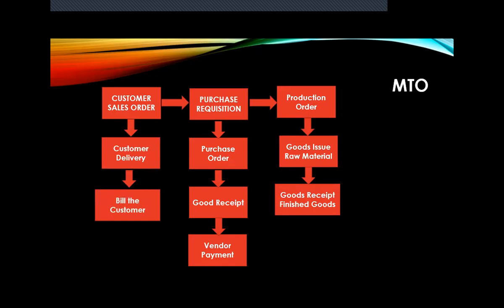So this is Make-to-Order: the customer gives the order confirmation, based on which raw material is purchased, sent to the production line, finished goods are produced, delivered to the customer, and the customer is billed. That is Make-to-Order. Whereas in Make-to-Stock, there is no interlinking between all three — sales, purchase, and production.